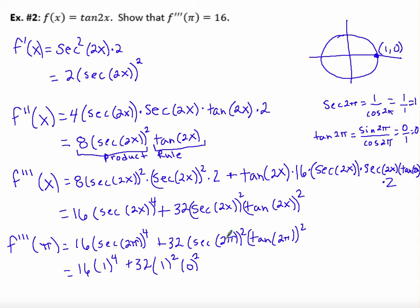So where I see tangent of 2π, I place a 0 in. 0 squared is 0. 0 times 1 squared is 0. Times 32 is also 0. 1 to the fourth power is 1. 1 times 16 is 16. So I've got 16 plus 0, which is 16. And that, my friends, is what we are trying to show.